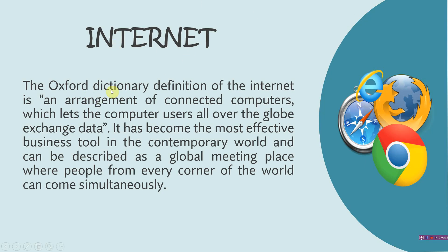According to the Oxford Dictionary, internet is an arrangement of connected computers which lets computer users all over the globe exchange data. Because of the internet, one can connect with everyone and exchange data, information, videos, and anything. With the help of the internet, one can do online shopping, search information, and have access to all kinds of information, videos, PPT presentations, and anything.